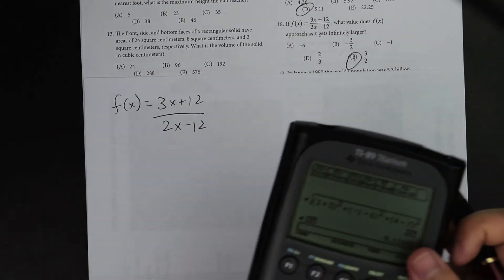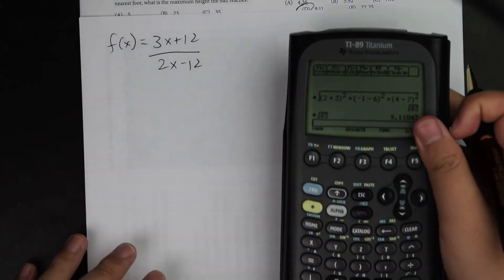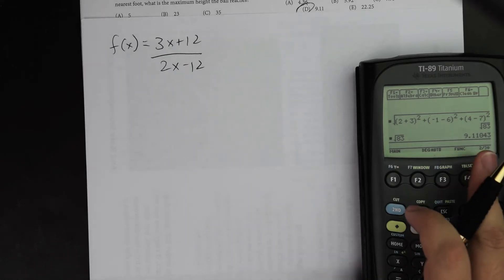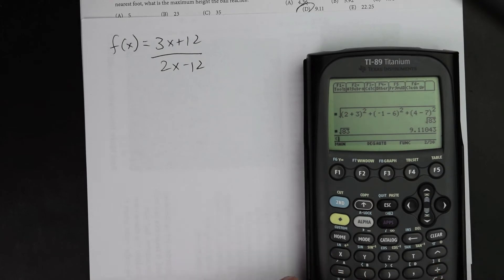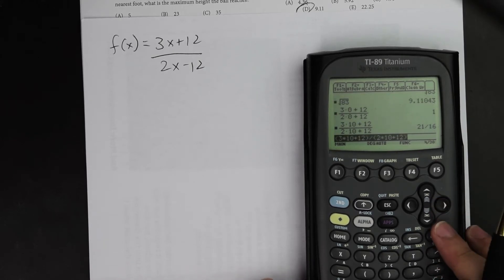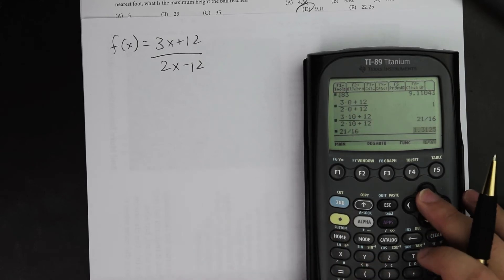The longer way, and you should know this just in case you forget or you get really nervous and you're rushing. The idea is that when I have 3x plus 12 over 2x minus 12, it's the idea that as x gets larger, it's going to infinitely get nearer to a specific value. And so for example, I'm going to go ahead and write 3 times 0 plus 12 divided by 2 times 0 plus 12. I'm going to plug in 0 on purpose because you want to see that it's going to start at 1. And if I keep taking the same value, and let's say I plug in 10 into these zeros now and change it to 10 as my x, it's going to become 21 over 16, which is going to be like 1.31.